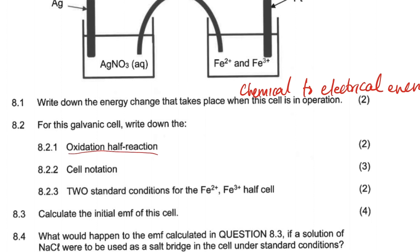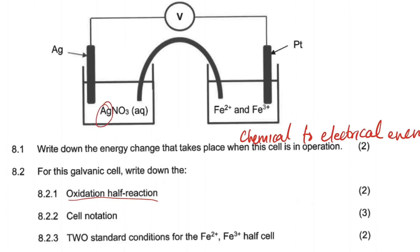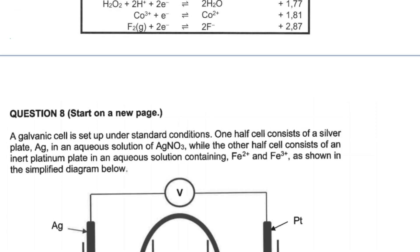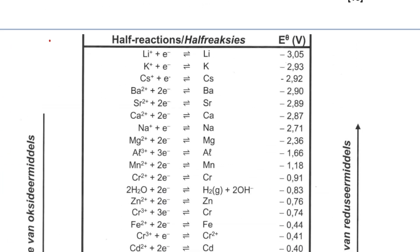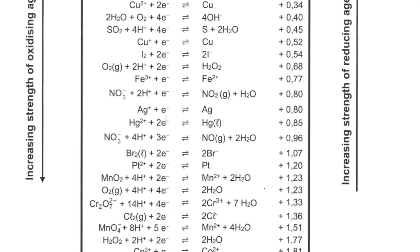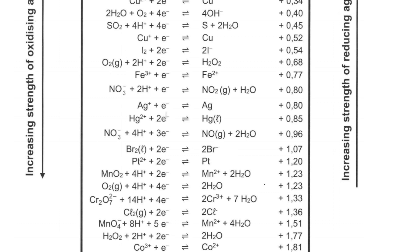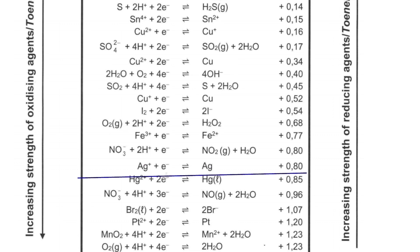Now, write down the oxidation half-reaction. What will help us here is knowing we have silver and the Fe²⁺ and Fe³⁺ ions. We go to the electrochemical table and look for silver and iron. Here's the silver on the table, and here's the iron.